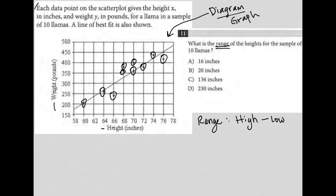The range for the heights means we want to know what is the highest value for the heights. I'm going to go to my x-axis. The highest value for the heights is right here - that llama is the tallest and it is 76 inches. The shortest llama is right here and its height is 60 inches.